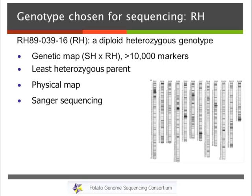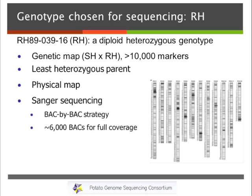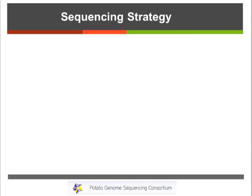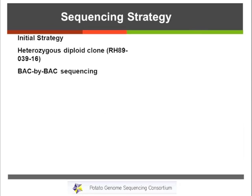This project started in 2005–2006, before the advent of really efficient next-generation sequencing methods. We started off with a BAC-by-BAC approach, and the estimation was that we would need to sequence 6,000 BACs for full coverage of the potato genome. The initial strategy was to use the RH BAC-by-BAC library.